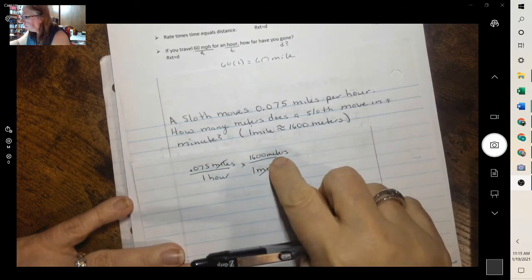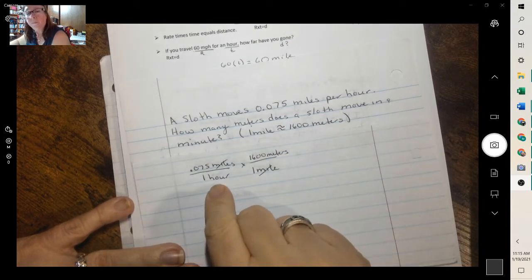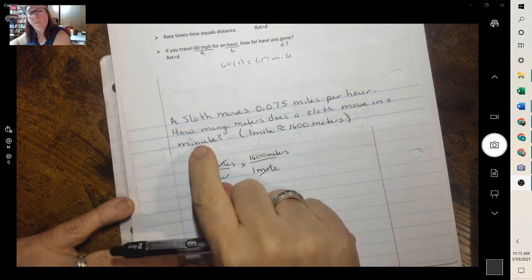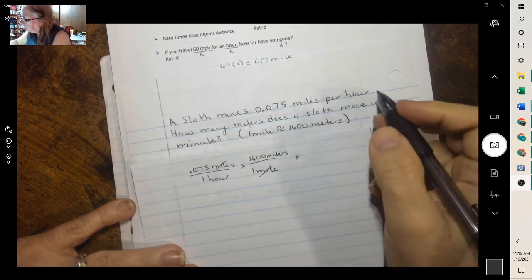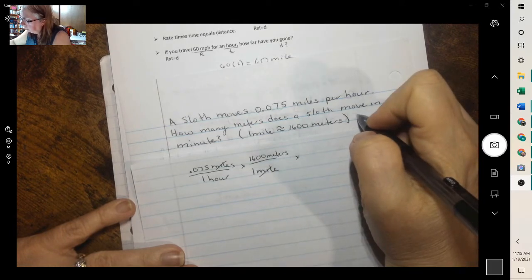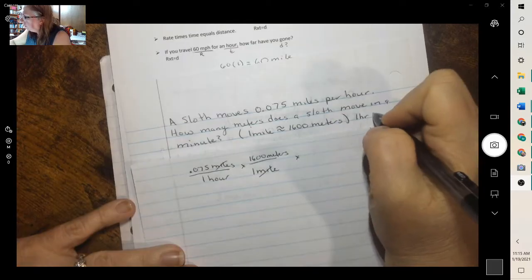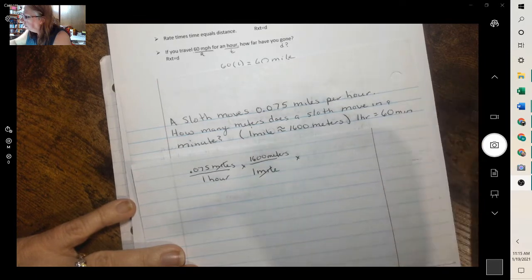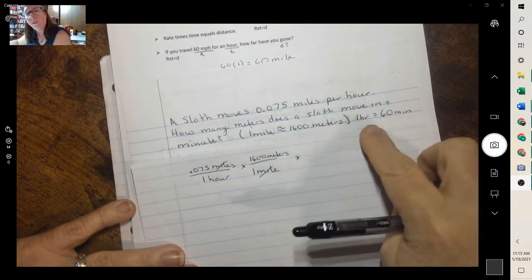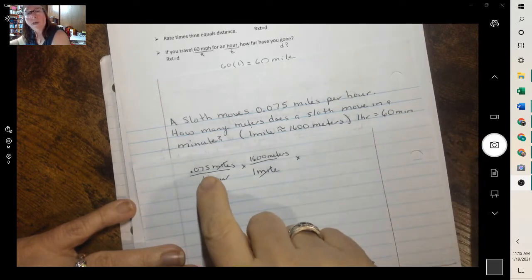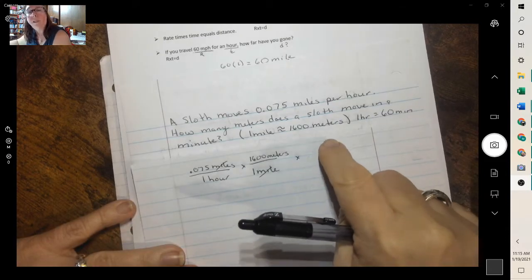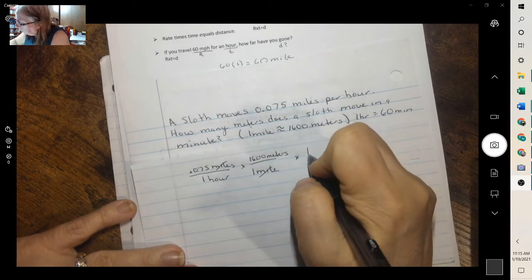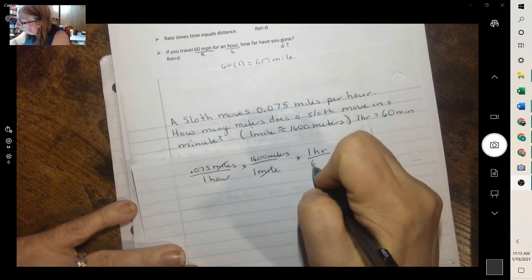Well, now we have meters per hour, but we want meters per minute. We know that one hour is 60 minutes. Now you just need to decide which one will be on the top. Well, hour needs to cancel and it's on the bottom, so hour over here needs to be on top. One hour is 60 minutes, and then the hours cancel. So we have meters per minute.